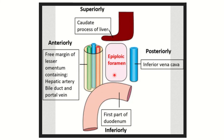Here is the epiploic foramen — this is the anterior side, this is the posterior side, upper side, and lower side. Anteriorly, this structure is the lesser omentum, specifically the free margin of the lesser omentum, which contains three structures: the bile duct, the portal vein, and the hepatic artery. Posteriorly is the inferior vena cava, superiorly is the quadrate lobe of the liver, and inferiorly is the first part of the duodenum.